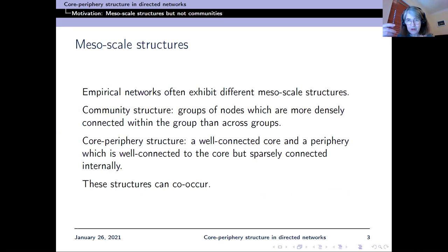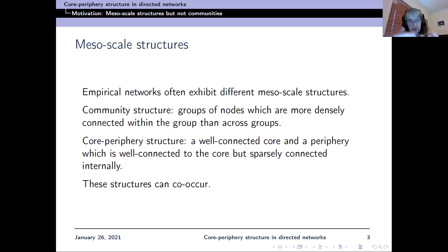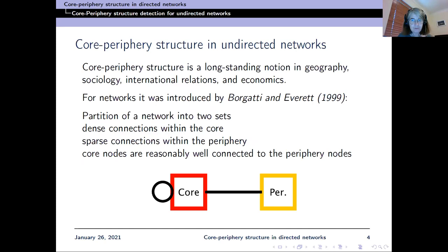Pretty much all of you know about community structure as a typical mesoscale structure in networks. In community structures, we have groups of nodes which are more densely connected within the group than across groups. But in core-periphery structure it's slightly different: we have a well-connected core and a periphery which is well-connected to the core but sparsely connected internally. We can also have both structures co-occurring in the same network.